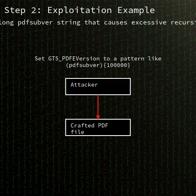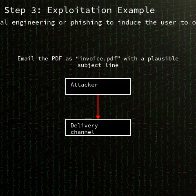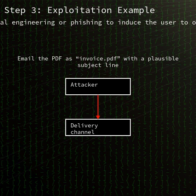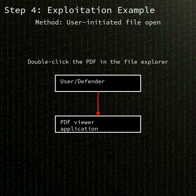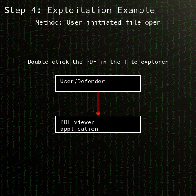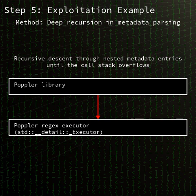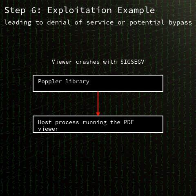A malicious PDF can embed deeply nested or overly complex data in its metadata section, most notably in the GTS_PDFXVersion entry or similar fields. When Poplar processes this crafted metadata, its dictionary lookup and catalog routines invoke the library's internal regular expression executor in a deeply recursive fashion.